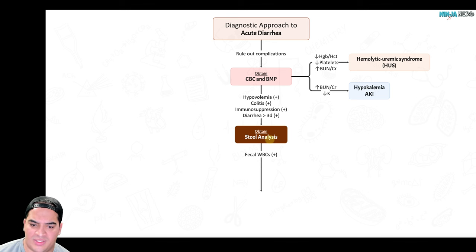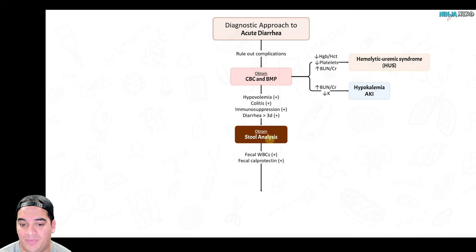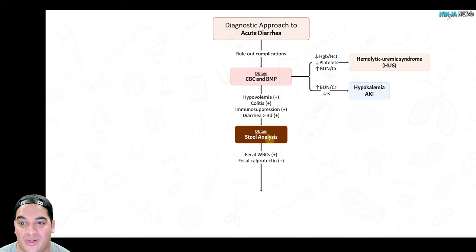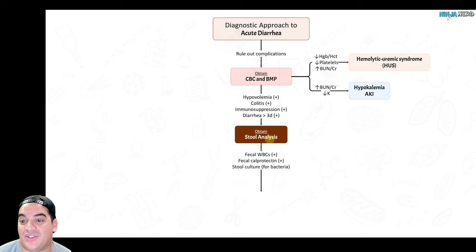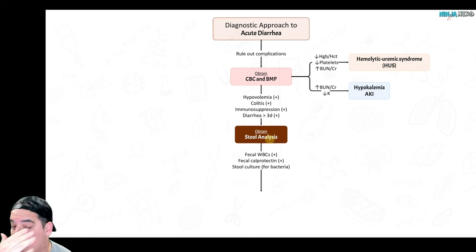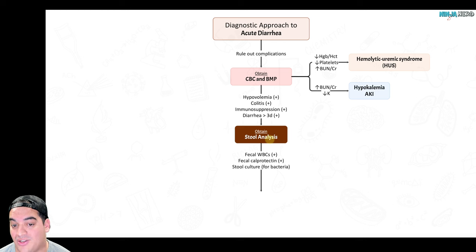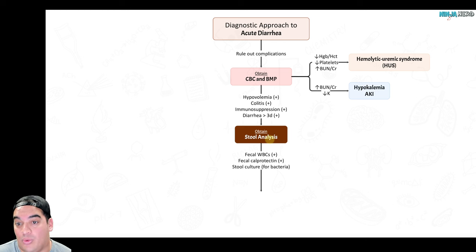The stool analysis includes: fecal WBCs and calprotectin — elevated values indicate inflammatory diarrhea. Then get a stool culture, which is critically important because we don't prescribe antibiotics to patients with EHEC due to the high risk of HUS. Knowing the specific bug guides antibiotic choice.